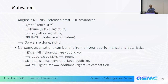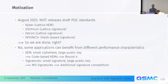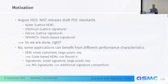Another spot in this performance spectrum is signatures that have small signatures and large public keys, which can be very useful if you don't have to transmit the public key and just need to send the signature. An example for this is MQ signatures, and that's what NIST wants from another competition they recently started, asking for additional signatures to complement the lattice-based and hash-based signatures.